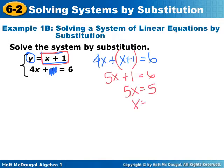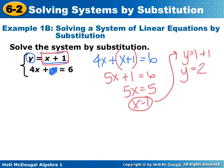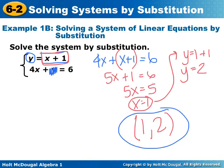So x is 1. If x is 1, y equals x plus 1 or 1 plus 1. So y is 2. So this is my ordered pair. This is my solution. 1, 2.